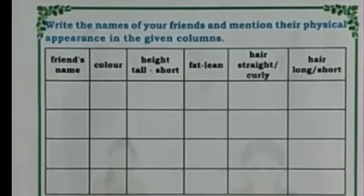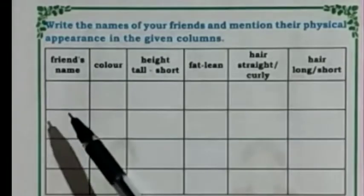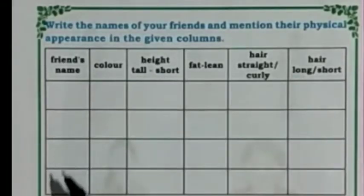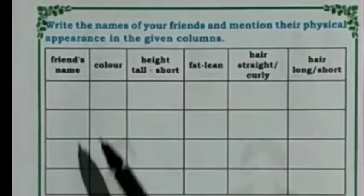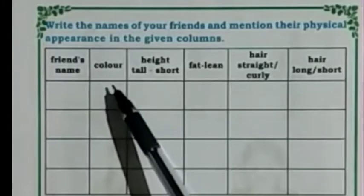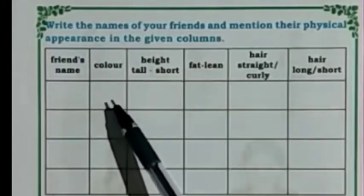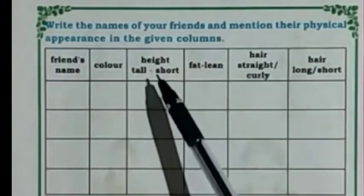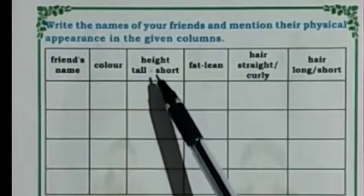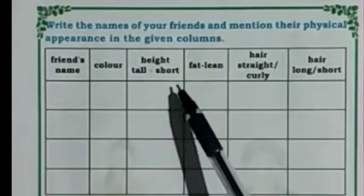Children, write the names of your friends and mention their physical appearance in the given column. Write your friend's name and color of your friend — fair or dark. And height of your friend — tall or short.